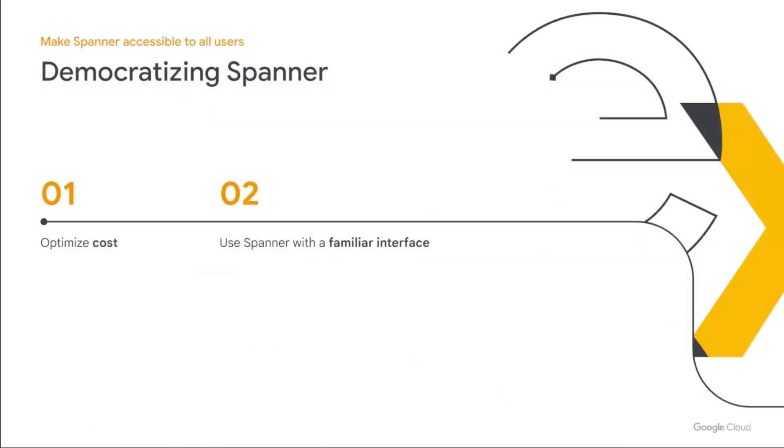Now let's talk about some of the latest innovations and highlights in Spanner, starting with an initiative called Democratization of Spanner. This has been in the works for quite some time and we have launched a lot of capabilities related to it. Democratization of Spanner includes two main elements: one is cost, and the second is improving familiarity by providing a familiar interface to access Spanner.